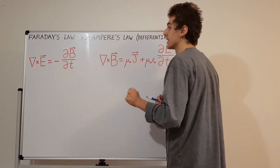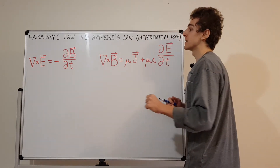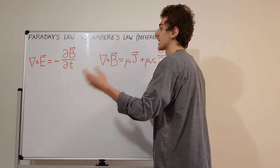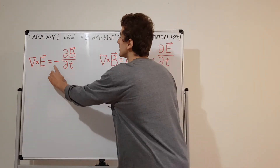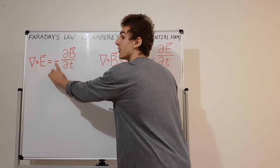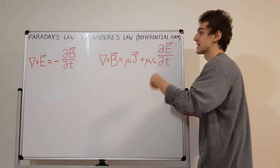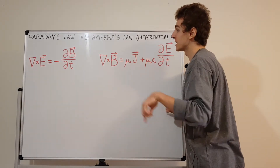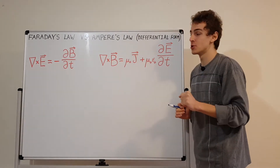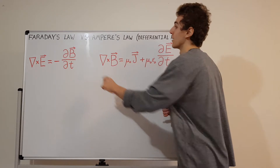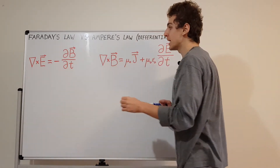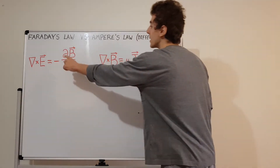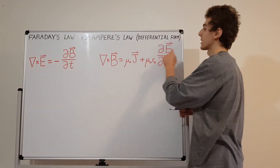Faraday recognized that changing magnetic fields can induce circulating electric fields. The negative sign here is very important — it tells you that the sign of that circulation opposes the change. So the circulation in the electric field opposes the change in magnetic field. When I say change, I always mean change with respect to time, which is why we have these partial derivatives with respect to time.